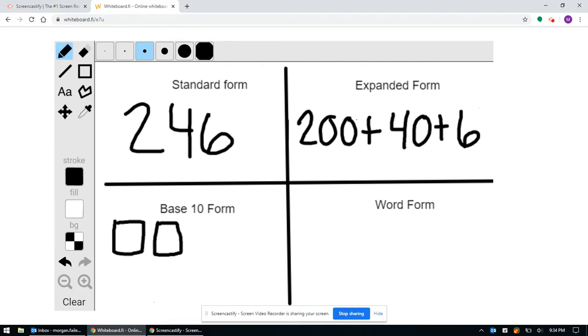We have four tens – 1, 2, 3, 4. And six ones – 1, 2, 3, 4, 5, 6. Two hundreds, four tens, and six ones – 246.